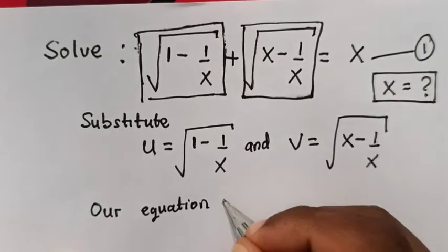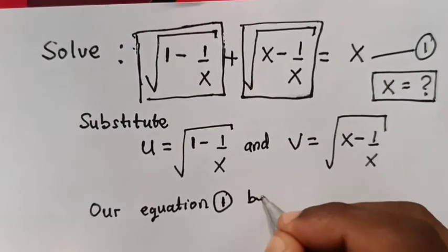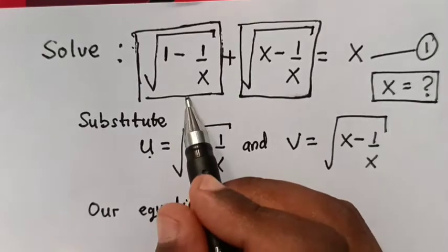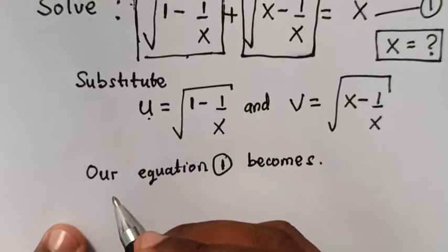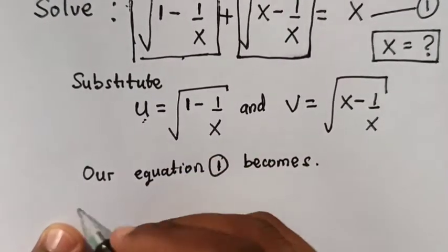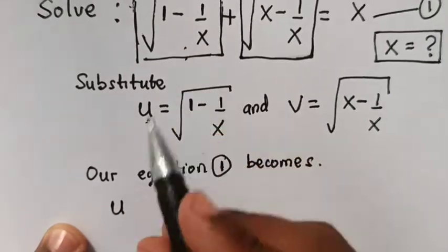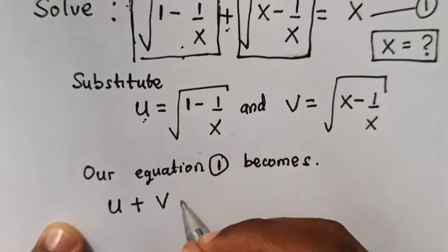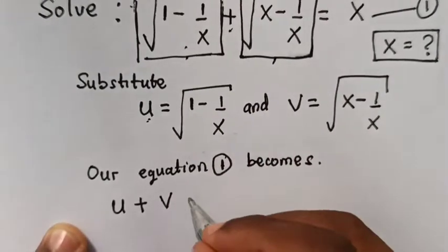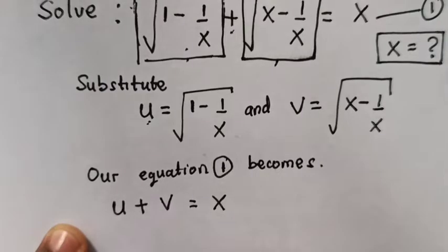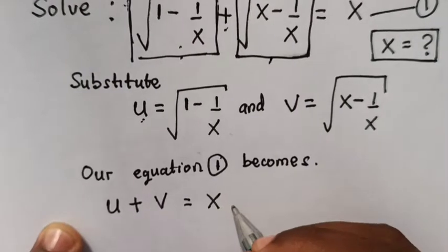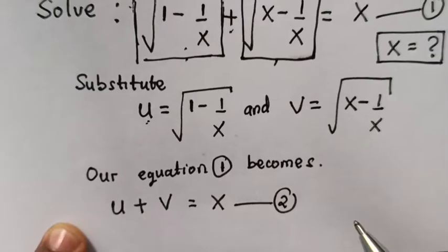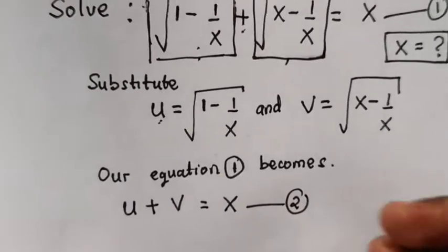When we substitute, equation 1 becomes: this is u, so it will be u plus v — this is v — is equals to x. So when we substitute it will be u plus v is equals to x. We will call this equation 2.